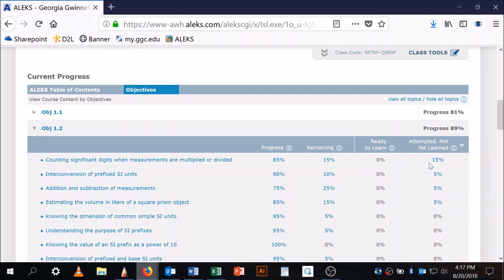Looks like almost everybody got these three: interconversion, prefix, SI units, and so on. Almost everybody got those three. And I think I have videos on all of them anyway. And I think I have a video on that one too.